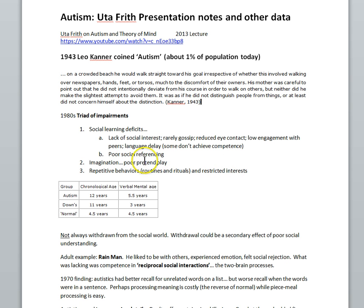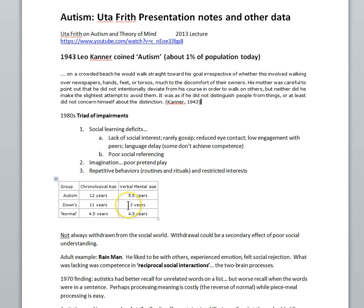Looking back at the language delay, if we compare autism to Down syndrome or normally developing children, you might have an autistic individual who is 12 years old but has the verbal mental age of 5 — which would be in the ballpark of Down syndrome. But again, there is a wide spectrum of language competence in autistic individuals, hence the spectrum idea, where some can be high-functioning.